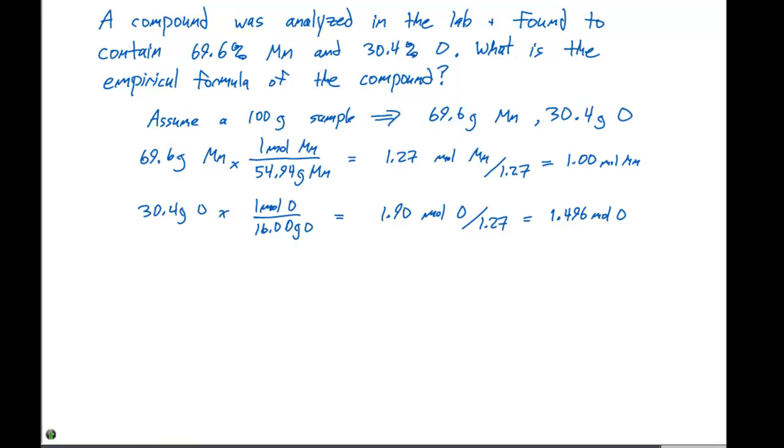In this case, we have 1.5, which would be 3 halves. What we need to do is multiply this 1.49 times 2. When we do that, that's going to give us a whole number factor, or that's going to equal 2.992, which we can just assume is going to be 3.